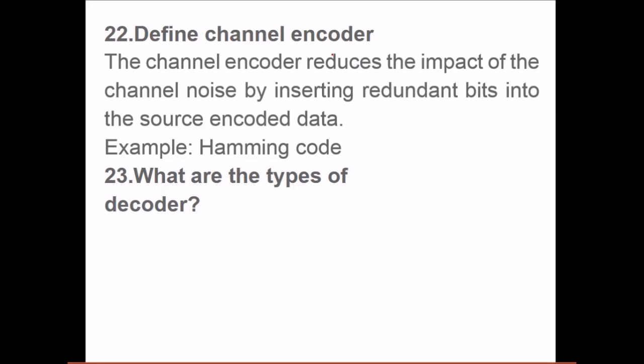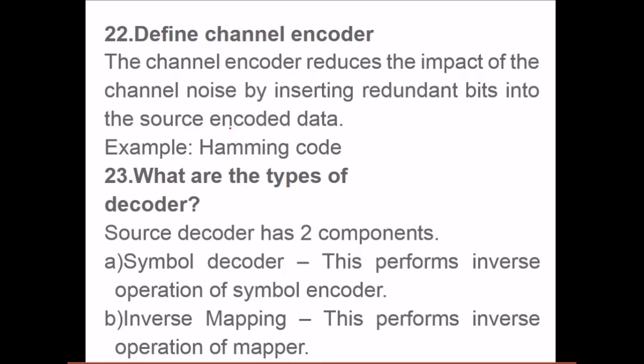What are the types of decoder? Source decoder has two components: symbol decoder and inverse mapping. The symbol decoder performs inverse operation of the symbol encoder, and inverse mapping performs the inverse operation of the mapper.